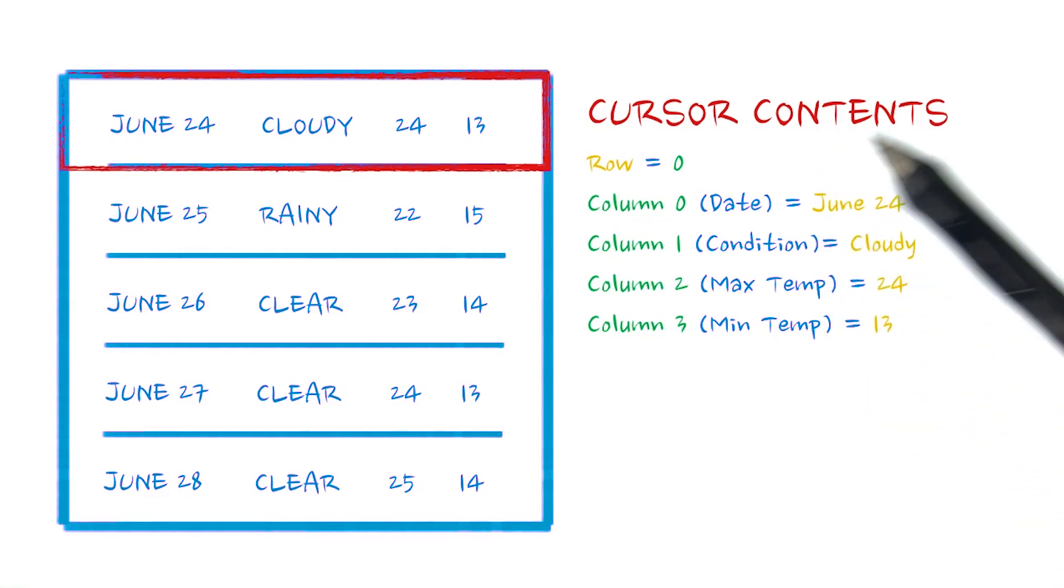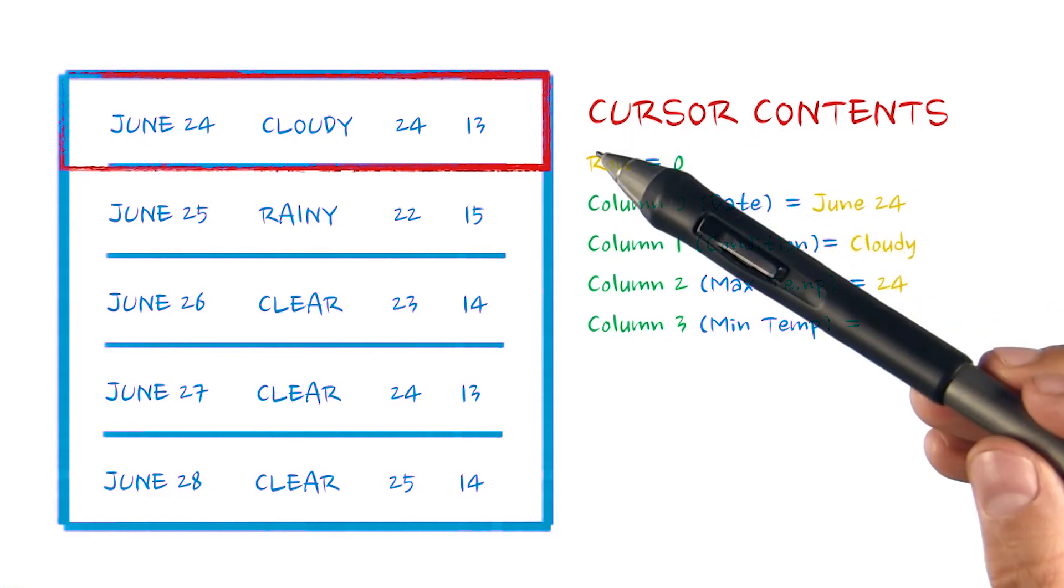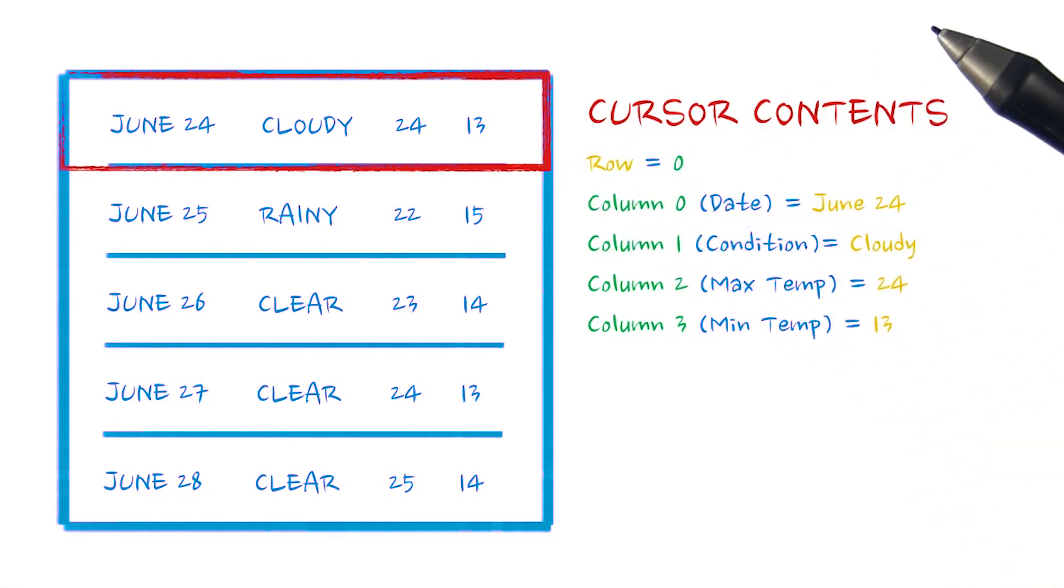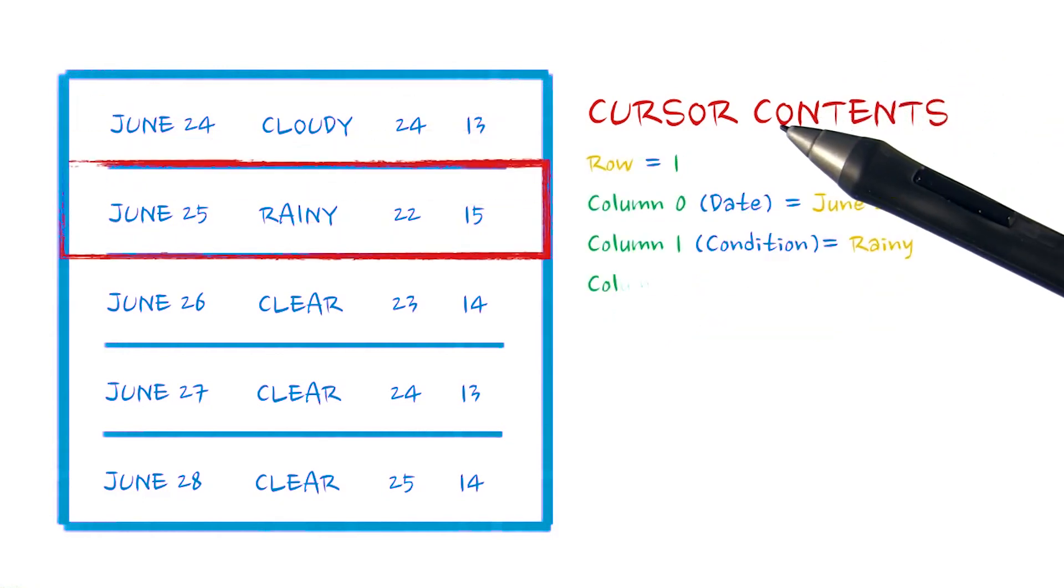Typically, we'll start traversing result set by calling cursor.moveToFirst, which will return false if there are no rows in the result, which means nothing matched the query parameters. We can then call moveToNext to iterate through each row.